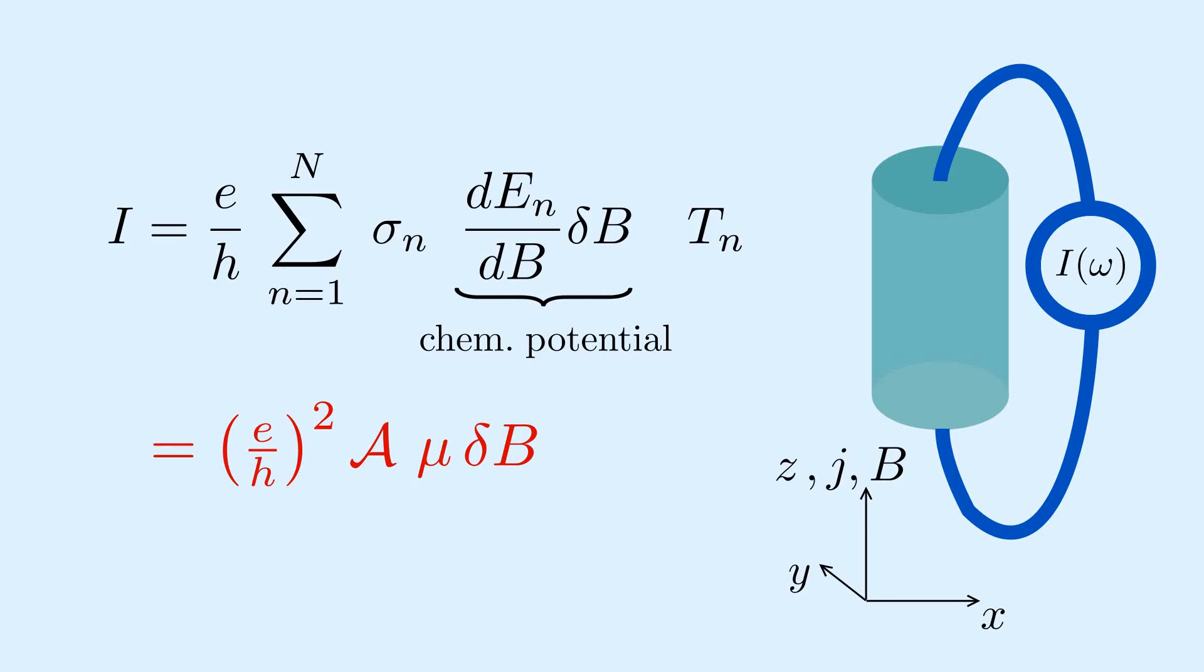There is a deep connection between the two chiral magnetic effects. If one starts from a wire and slowly turns on a magnetic field, one sees that the surface states that form the wire solenoid move into the bulk and form the chiral Landau level.